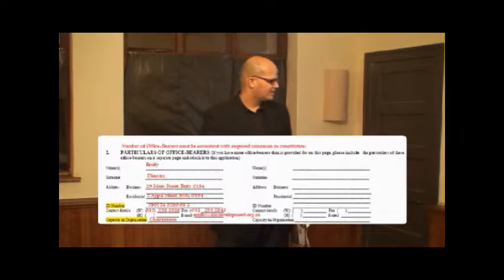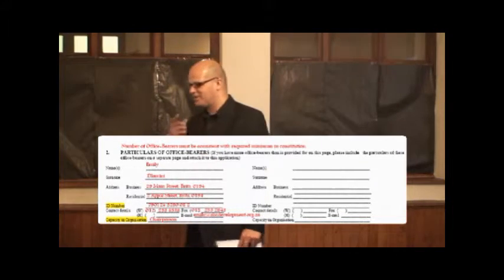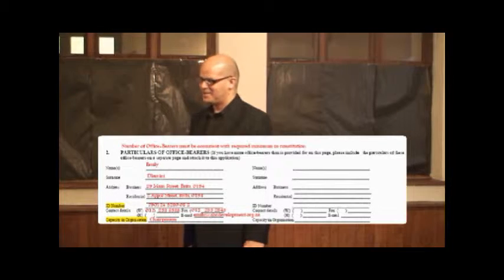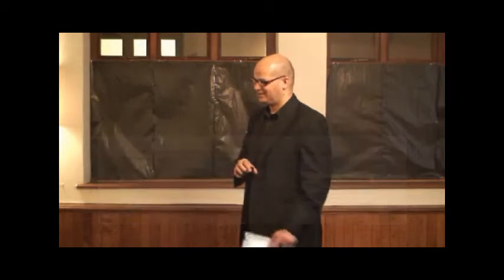The name and surname of the office bearer, the business and residential address, and then the ID number. The ID number is also important because it's easy to miss a digit. I have experienced that if you miss a digit, that application will get sent back. How many numbers are in the ID number? 13. So let's check that all the numbers are there.